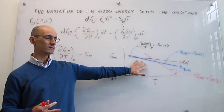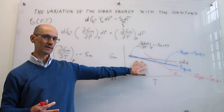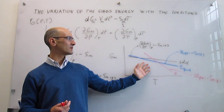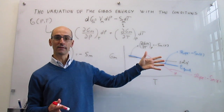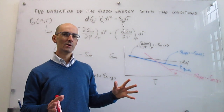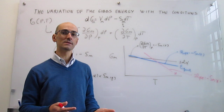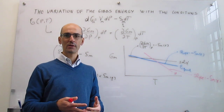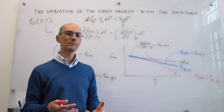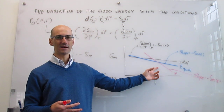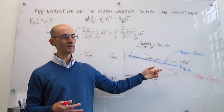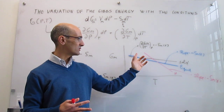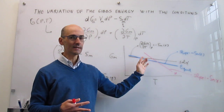One more important note: the lines are drawn as straight lines, but that is an approximation. Straight lines imply a constant slope, meaning the molar entropy would be constant with temperature. However, we know that entropy increases as temperature increases — a gas at higher temperature has more entropy than at lower temperature. Therefore the slopes of these lines are not truly constant; they should become increasingly negative as temperature rises. We draw them as straight lines for simplicity.